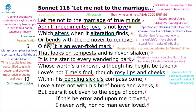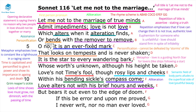In line ten, 'within his bending sickle's compass' — the bending sickle refers to the Grim Reaper who comes to take us all. The alliteration in 'compass come' further emphasizes that the Grim Reaper will come, but love should still endure after death. The lexis of time in 'love alters not with his brief hours and weeks' shows that love must grow rather than diminish with the passage of time.